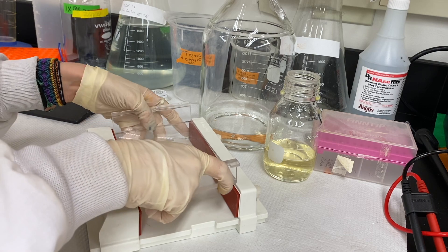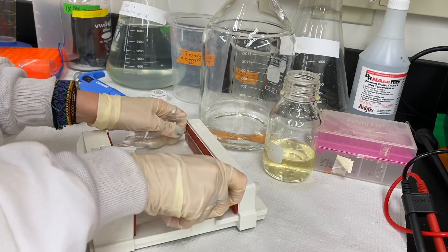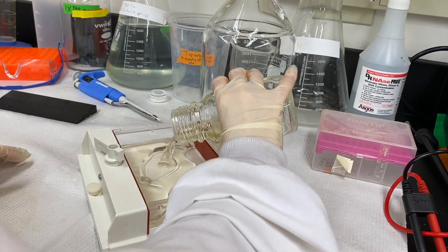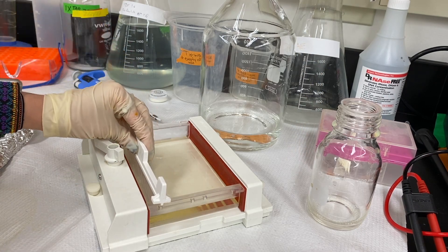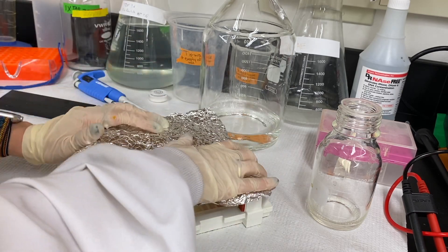Next, I pour the solution into this mold where it will cool for about 15 more minutes until it becomes a solid gel. These prongs are placed in it to leave a hole where DNA can sit once the gel is fully solid.